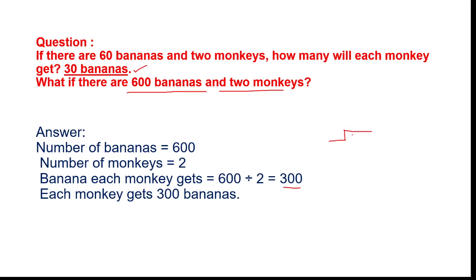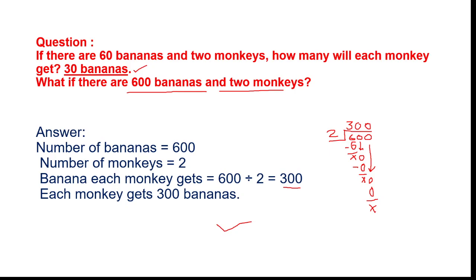Six hundred is the dividend, so write it inside the box; two is the divisor. Two times three equals six, write six, subtract to get zero. Bring down the next zero; two times zero equals zero. Bring down the final zero; two times zero equals zero again. So each monkey gets three hundred bananas. With this we come to an end. I hope these questions are clear to you. Thank you, have a nice day!